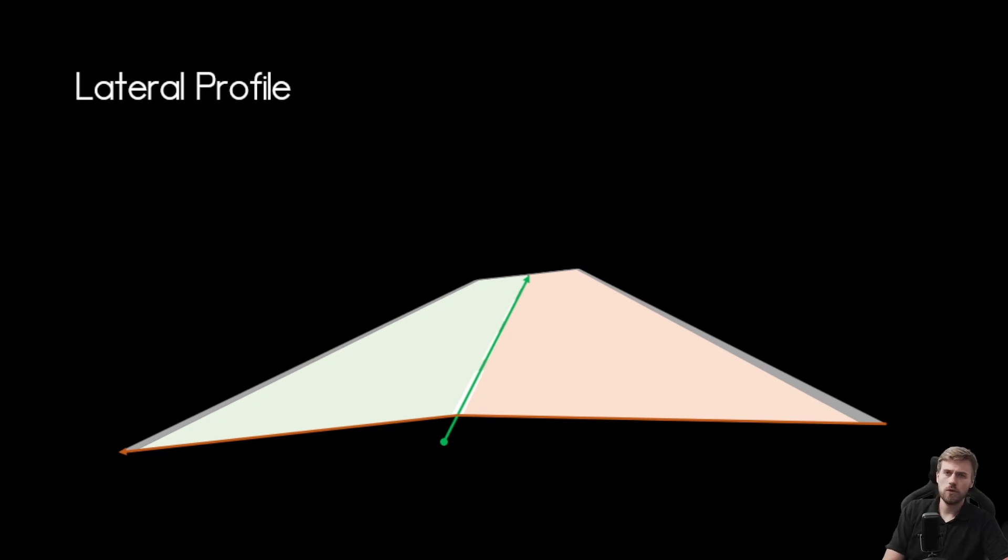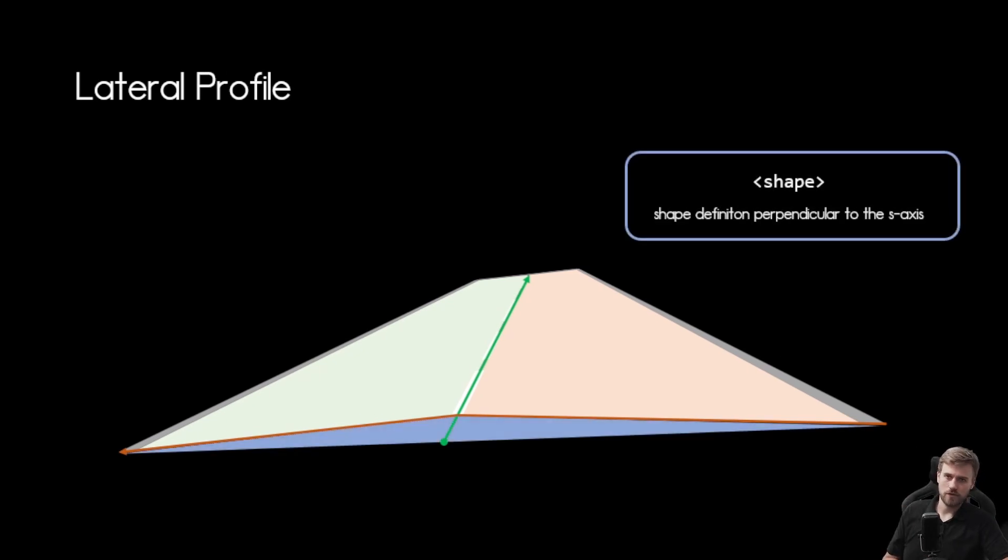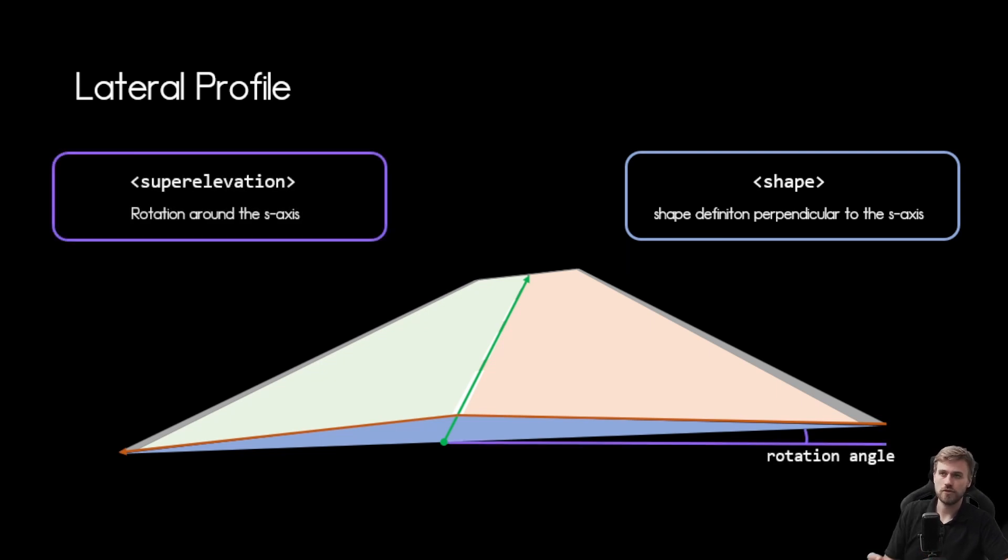Within the lateral profile we will find our shape entry and our shape entry is perpendicular to the S axis and defines our road shape at a given S coordinate. But we have a second part in our lateral profile that can be interesting and I will make a future video about and that is the super elevation which is a rotation of the whole road across the T axis using the S axis as a rotation point and applies a rotation angle to our road. But for now we will stick to the shape element and so let's see how that is defined.